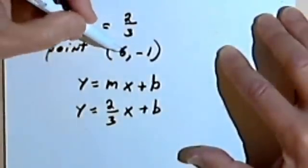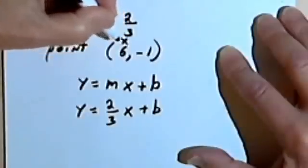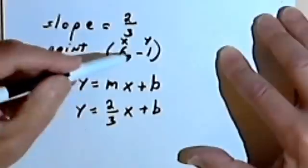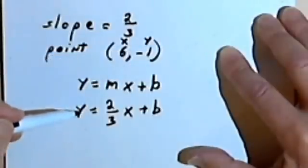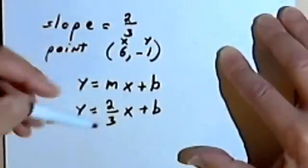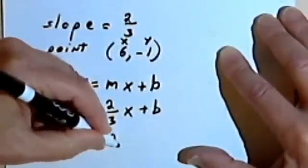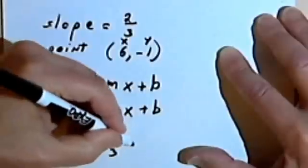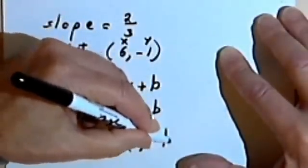We also know that when we have an ordered pair, the first number in the ordered pair is an x-value, and the second number is a y-value. So I'm going to take this ordered pair, which is an x and a y, and plug those values in where I have x and y in my equation. So instead of this y, I'm going to write negative 1. So I've got negative 1 equals two-thirds, and instead of the x, I'm going to write 6. Two-thirds times 6 plus b.